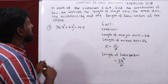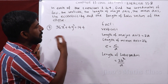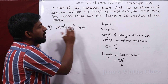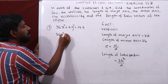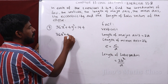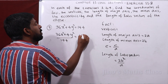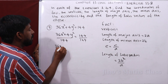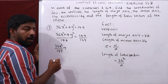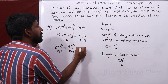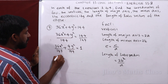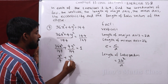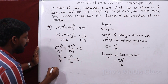The next question: 36x² + 4y² = 144. This is not yet in standard form, so we divide the entire equation by 144: 36x²/144 + 4y²/144 = 1, which simplifies to x²/4 + y²/36 = 1.